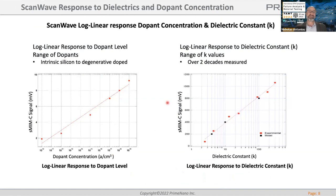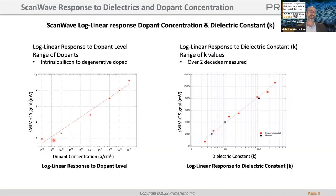Let's look at the response of the sMIM signal to dopant concentration. We made samples because we couldn't find off-the-shelf very low-doped or intrinsically doped silicon, so we had samples made with very low doping and intrinsic silicon to measure the response down to that level. We also have a sample going up to 1E20. The response is log-linear, meaning it's easy to predict a value if you have at least a couple of points on this curve from a reference.